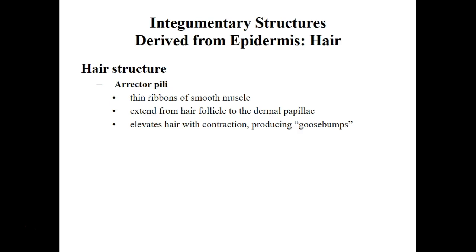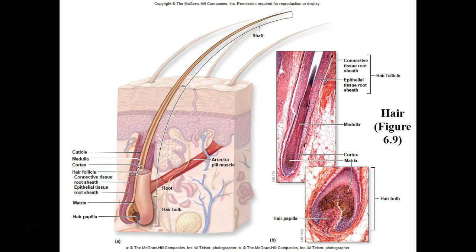Erector pili muscles control our hair. They help produce the changes you see when you have goosebumps — when you get very scared and your hair stands on end. The function is to make your hair stand out so you can stay warm or puff your body up and look scarier, though we don't really use it for that purpose. In the diagram, here's the erector pili muscle, the hair, the hair papilla, and the matrix — this is where the hair is living. As the hair leaves this region and moves outward, it dies and is completely keratinized.